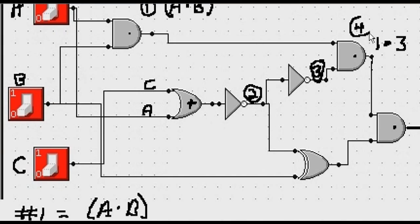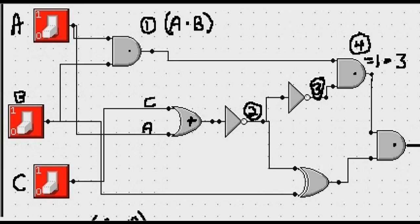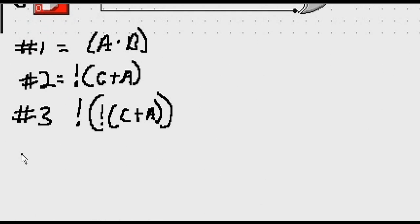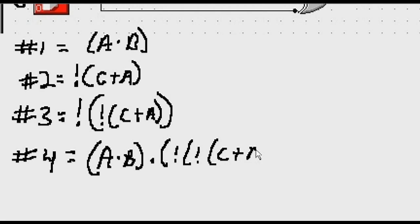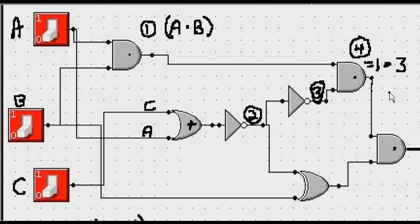Number four equals one ANDed with three. Okay, let's go down here and do that. So number four equals one ANDed with three. So that would be A and B ANDed with number three, which is NOT NOT C or A. And then one, two, three parentheses, one, two, three parentheses. That's number four. Wow, that was cool.